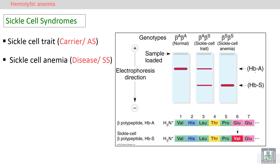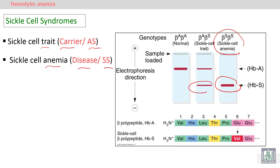Sickle cell syndrome can be either a carrier state or disease. AS in the genetic makeup represents sickle cell trait, while SS represents sickle cell anemia or sickle cell disease, where the patient has complete hemoglobin S.